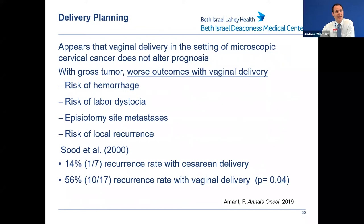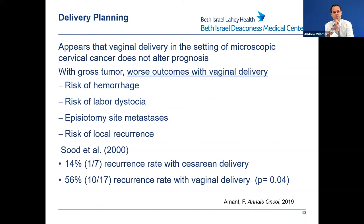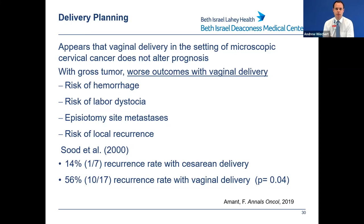An important caveat on delivery planning: patients who undergo vaginal delivery in the setting of microscopic cervical cancer do not have an altered prognosis, but patients with gross tumor in the cervix have worse outcomes with vaginal delivery. There is increased risk of hemorrhage, labor dystocia, and significant concern for episiotomy site or laceration metastasis and recurrence. One study found a 14% recurrence rate with cesarean delivery versus a 56% recurrence rate with vaginal delivery — statistically significant even in a small sample. For patients with gross tumor, we recommend cesarean delivery.